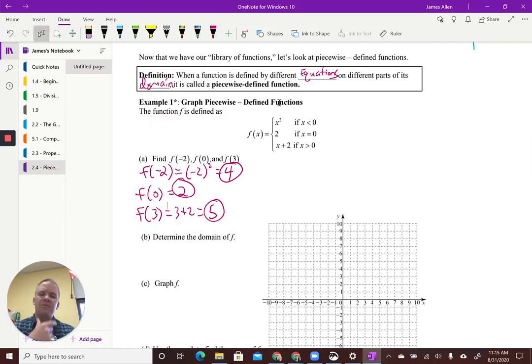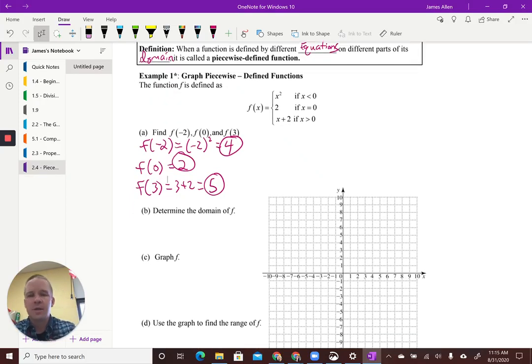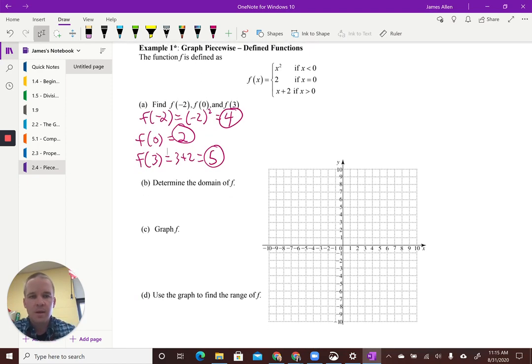All right. So now determine the domain of f. I often find this a little bit easier to do after I've graphed it. But we'll do it here, and then we'll also talk about it on the graph. So let's see. I have less than 0, so we know that x is less than 0. We know that it's equal to 0, and x is greater than 0. So that actually includes everything. So we're really talking negative infinity to infinity. There are no gaps in the domain. Now, if this equals 0 part was not here, it would be negative infinity to 0, not including 0, and then pick back up, not including 0, to positive infinity. But because it has every x value, it's all real numbers, negative infinity to infinity. So let's go ahead and graph this, and we'll also look at it visually.